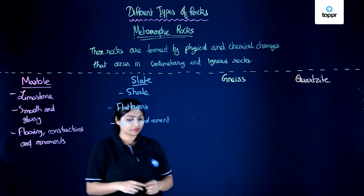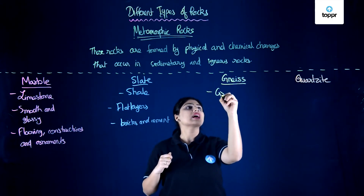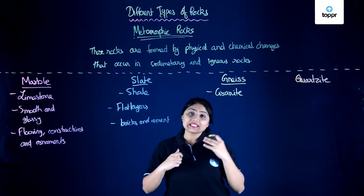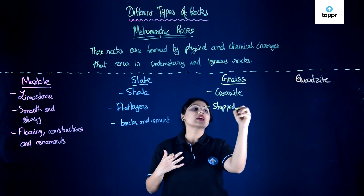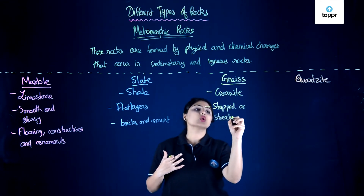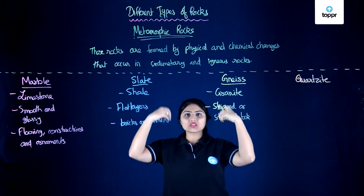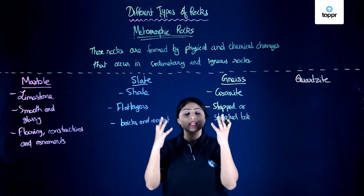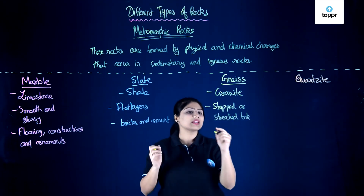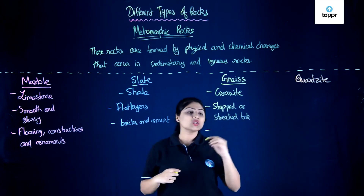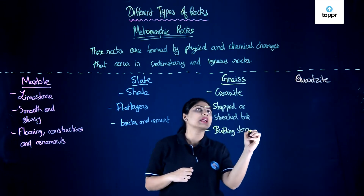Gneiss is made from an igneous rock — when changes occur in granite, gneiss is formed. Gneiss has a striped or streaked look, similar to how hair looks when certain streaks of color are added among darker hair. Gneiss is used as building stone; entire walls can be made from gneiss.